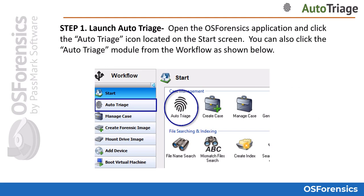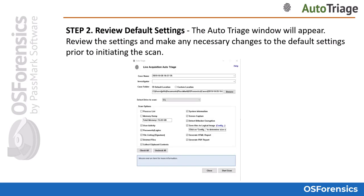To launch the auto triage module, simply click on it from the OS Forensics workflow or the icon on the start screen. Once the auto triage window appears, review the options and make any changes or customizations before selecting Start Scan.